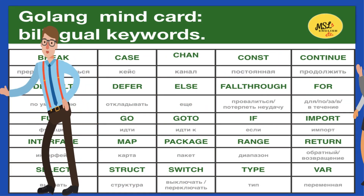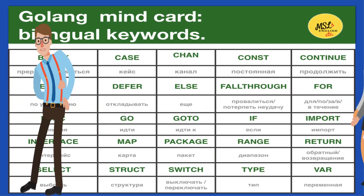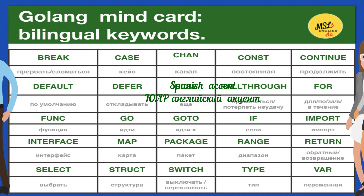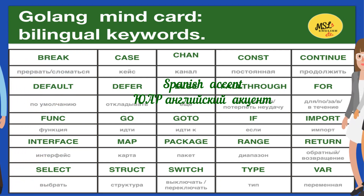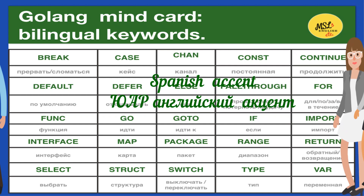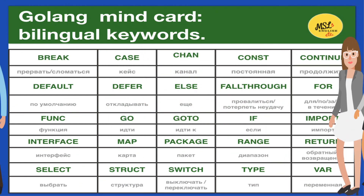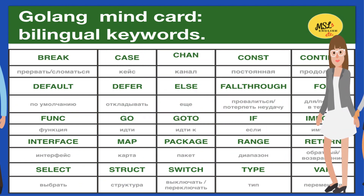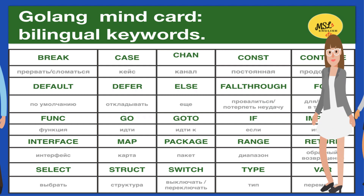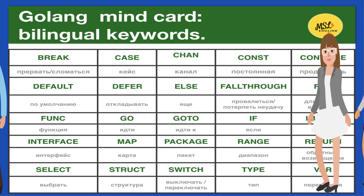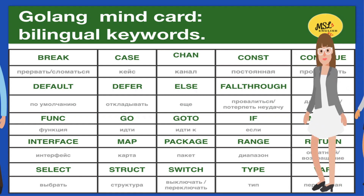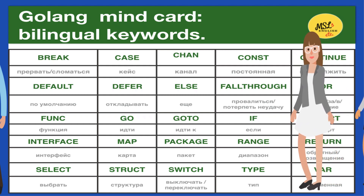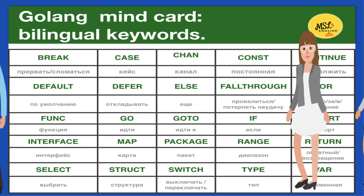Salud. I'm Miguel from Spain. Break. Case. Chan. Constant. Continue. Default. Defer. Else. Fallthrough. For. Func. Go. Goto. If. Import. Interface. Map. Package. Range. Select. Struct. Switch. Type. Var.